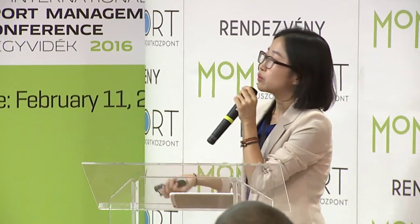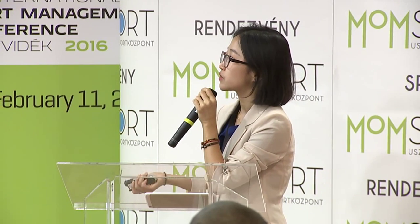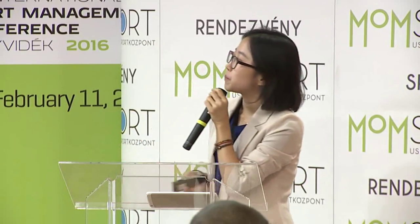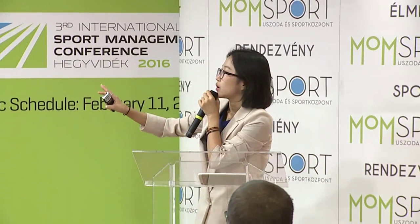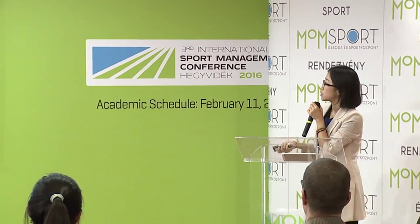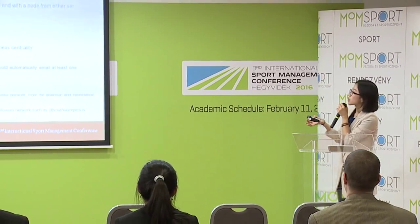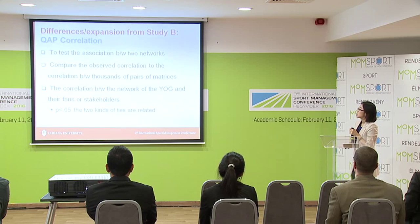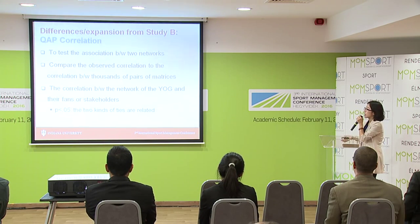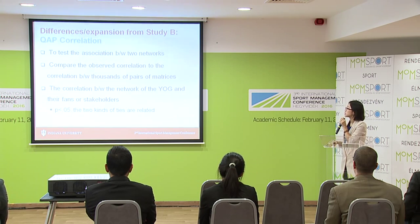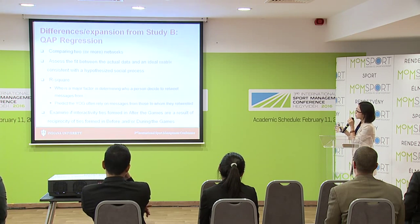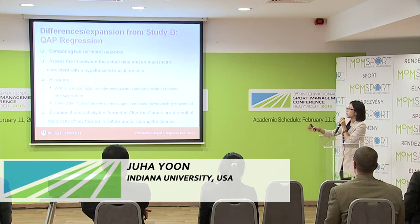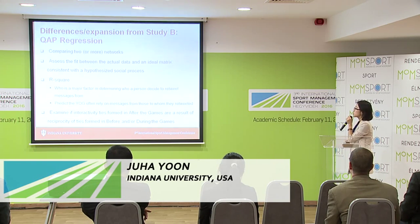There is information about what the two-mode networks are and also the centrality measures. Using these measures, I can find who has the power of the location, measure the popularity of the nodes, and identify who the information brokers are based on the level of betweenness centrality. Using QAP correlation, I'm able to test the association between two networks, and using QAP regression I can compare those two networks and find the major factor in determining who a person decides to retweet messages from.